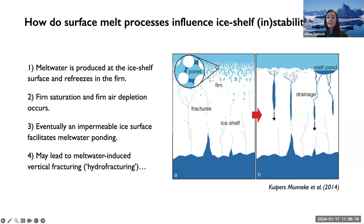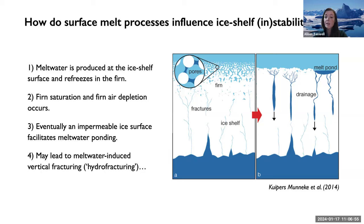Surface melting has an important connection with potential ice shelf instability. In warm summers, meltwater is produced and stored in firn — old snow not yet compacted into ice. Refreezing of meltwater causes firn saturation and firn air content depletion. This eventually results in an impermeable ice shelf surface, enabling meltwater to pond on top. Subsequently, these lakes may drain via meltwater-induced vertical fracturing potentially down into the ocean below, a process called hydrofracturing.